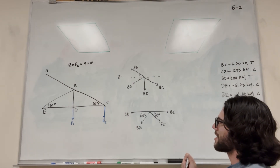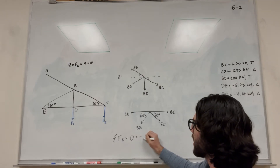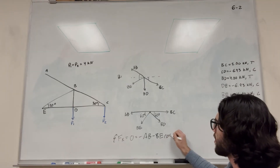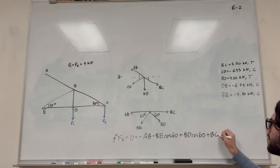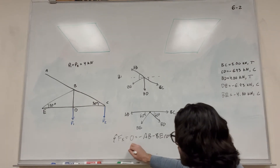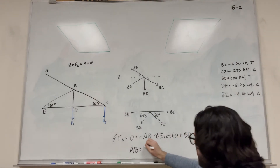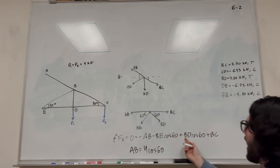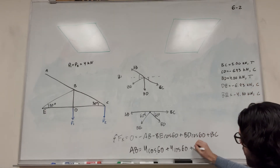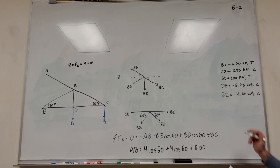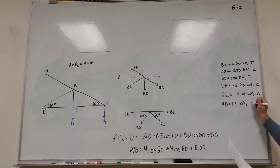Let's do the sum of the forces in the X direction — a little harder since we have four forces, but we know three of them. Sum of forces in X equals zero: negative AB minus BE cosine 60 plus BD cosine 60 plus BC equals zero. Solving for AB: minus BE is minus negative 4, so plus 4 cosine 60; plus BD is positive 4 cosine 60; plus BC is plus 8. Plugging that in, AB is equal to 12 kilonewtons, and that's a positive number, so we're in tension.